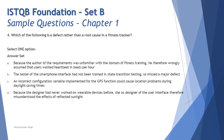Question four asks: which of the following is a defect rather than a root cause, on a fitness tracker system? Option A — 'the author of the requirement was unfamiliar with the domain and wrongly assumed the user wanted heartbeats in beats per hour' — is clearly a root cause explaining why the defect happened. Option B — 'a tester had not been trained in state transition testing so missed a major defect' — is also a root cause, explaining why the defect was missed.